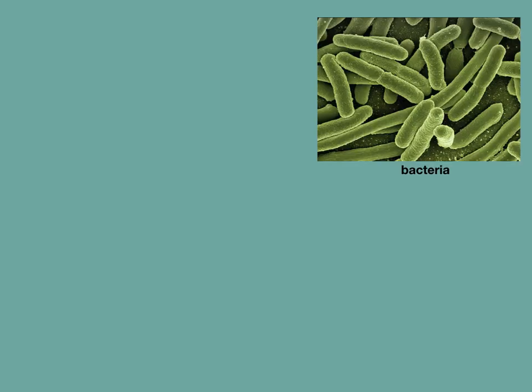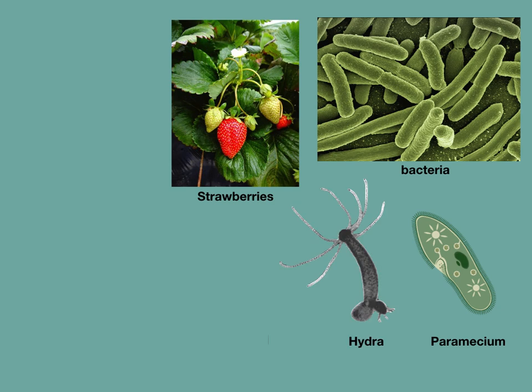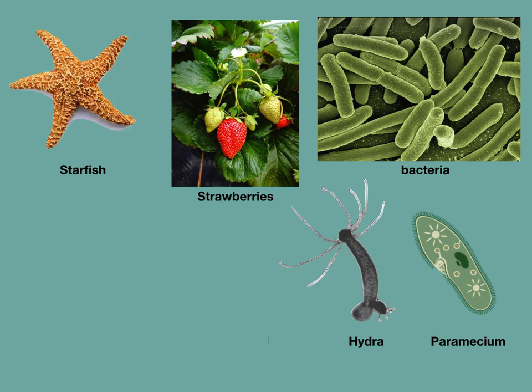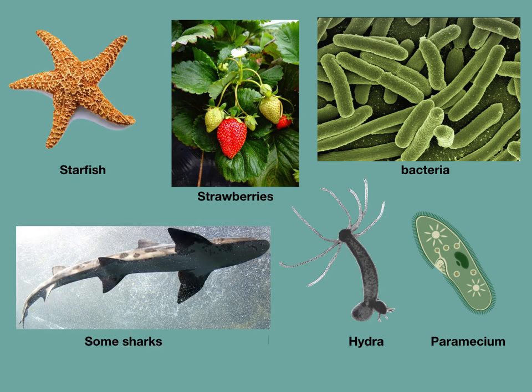You might be familiar with some organisms that reproduce asexually, like single-celled bacteria and paramecium. But multicellular organisms can also reproduce asexually, like strawberries, hydra, starfish, and even some species of sharks.